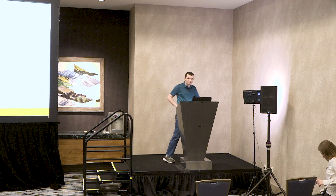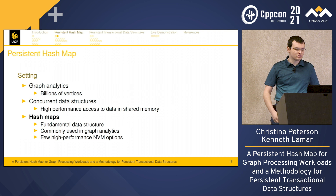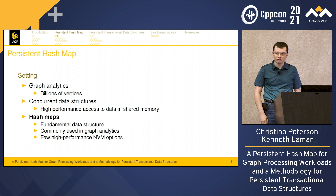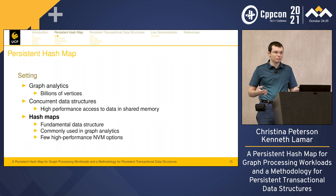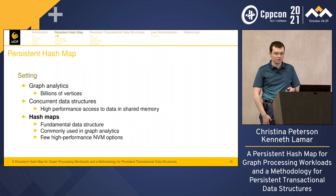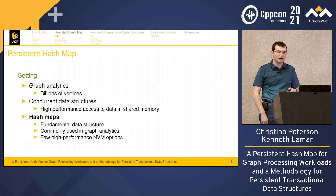My name is Kenneth Lamar and I'm going to talk about a persistent hash map design from my research. We partnered with Lawrence Livermore National Labs, who have experts on graph analytics problems with potentially billions of vertices. Our lab focuses on concurrent data structures — high performance structures allowing threads to access shared data. We targeted the hash map: a fundamental data structure commonly used in graph analytics, but we found there weren't a lot of high-performance non-volatile memory options available.